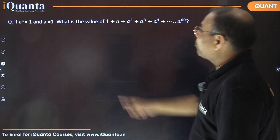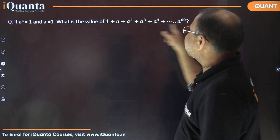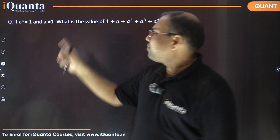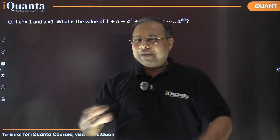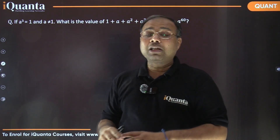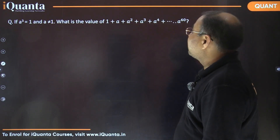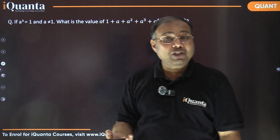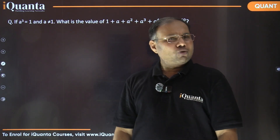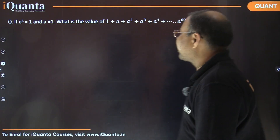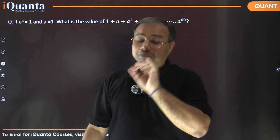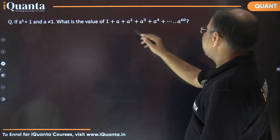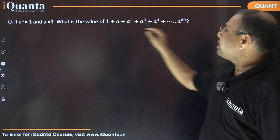Let's come back. We are supposed to find the value of this expression, given that a³=1. There are various ways to answer this question. One way is to treat it as a GP and find the sum. Let's do that. This is a GP of 61 terms, where 1 is the first term and a is the common ratio.